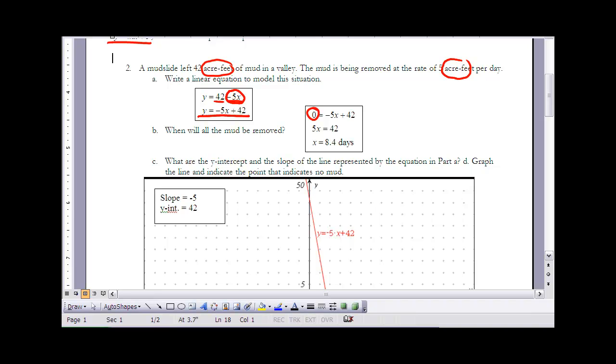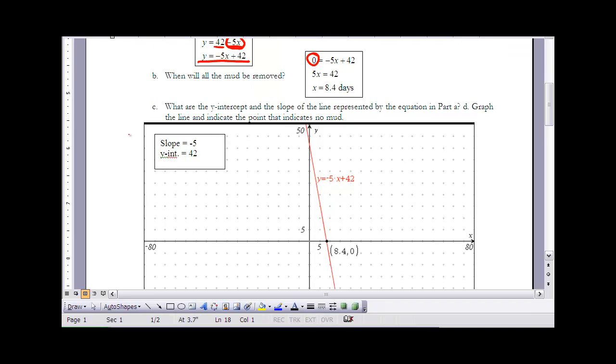Part c says what are the y-intercept and the slope of the line represented by the equation in part a, and then part d says graph the line and indicate the point that indicates no mud. I kind of did those two together, so I've got my slope and my y-intercept and I put them right here. I just took them right off the equation. Remember the slope is with the x value, the y-intercept is that b value, so 42. When I go to graph that, here's my graph. You'll notice that the point where it intersects the x-axis would represent not only my x-intercept but it also represents the point where we have zero mud in the valley. This point right here is the y-intercept, that would be that 42 that we have here.